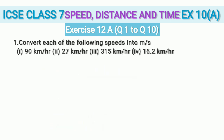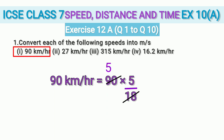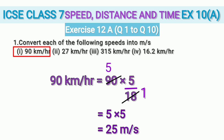Now that the mystery of 5/18 is solved, let us convert 90 km/h to m/s. We can cancel 90 and 18 using the 18 times table — 18 fives are 90 and 18 ones are 18. We are now left with 5 fives are 25, which is the speed in metres per second.